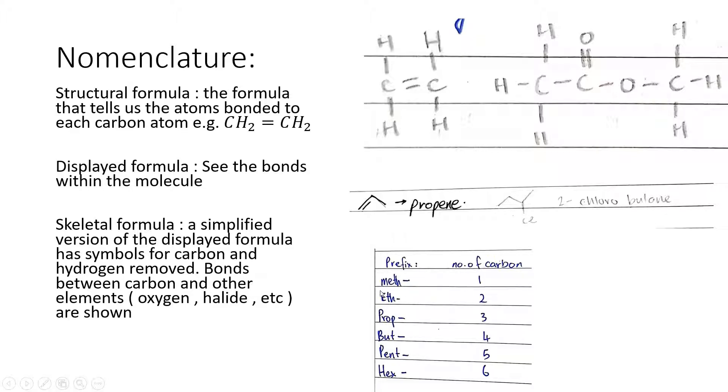Next up, just take note of the prefixes. For example, methane has one carbon, ethene in this case has two carbon, propene has three carbon, butane in this case has four carbon, pentane and hexane have five carbon and six carbon respectively.